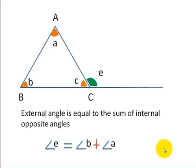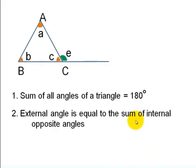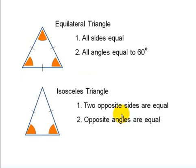To summarize the two properties: the sum of all angles of a triangle is equal to 180 degrees, and the exterior angle of a triangle is equal to the sum of its two internal opposite angles.